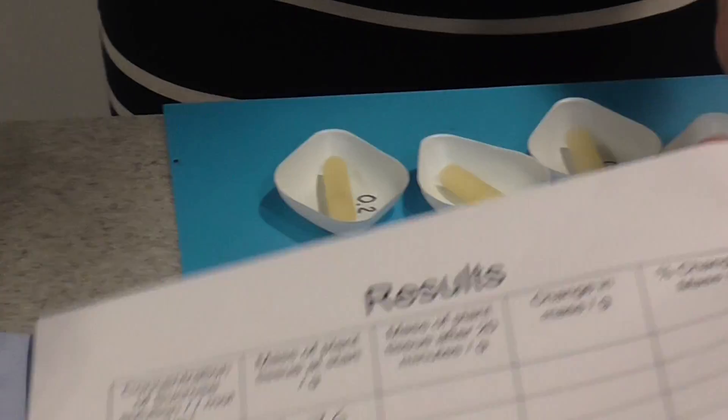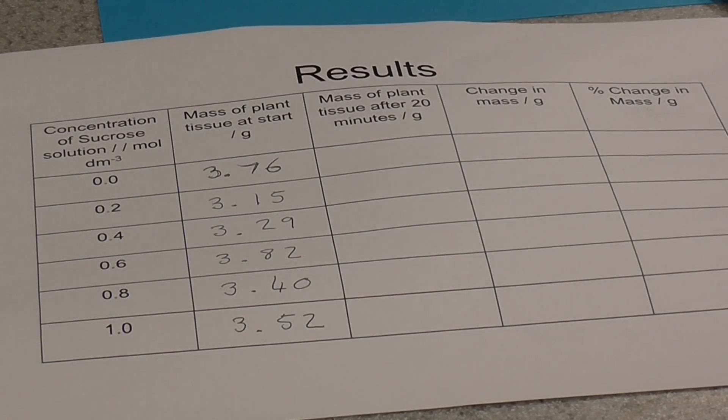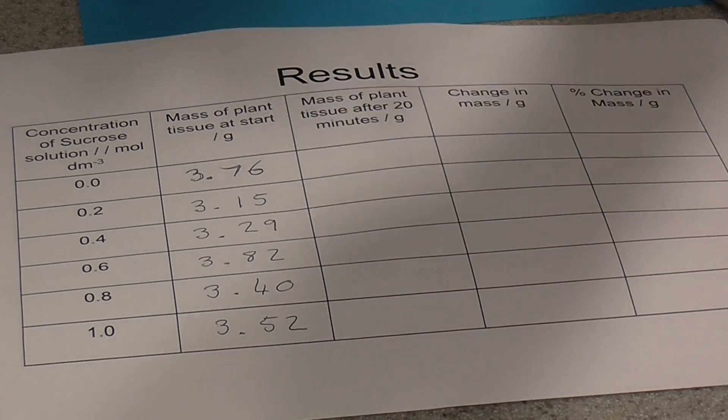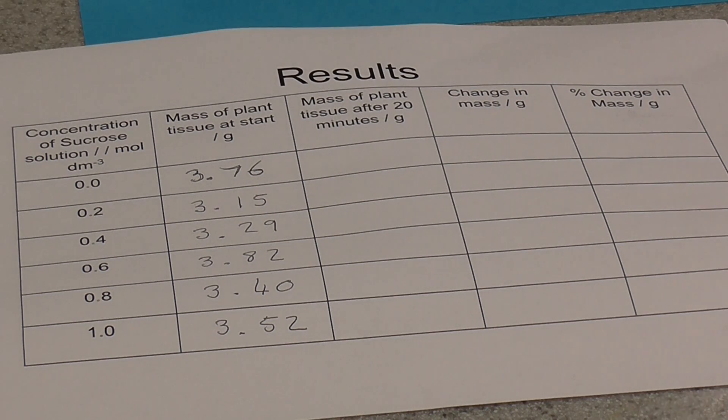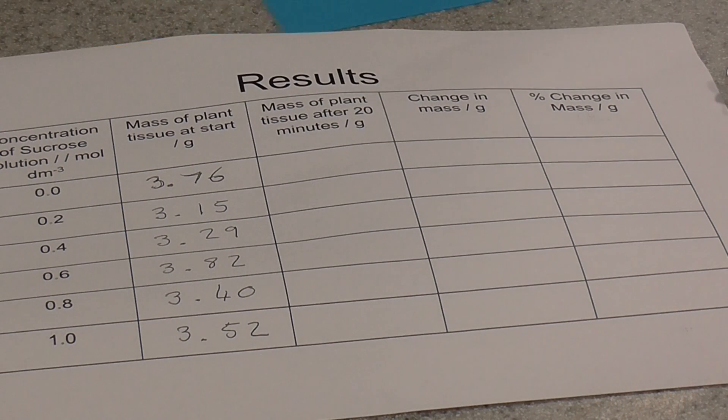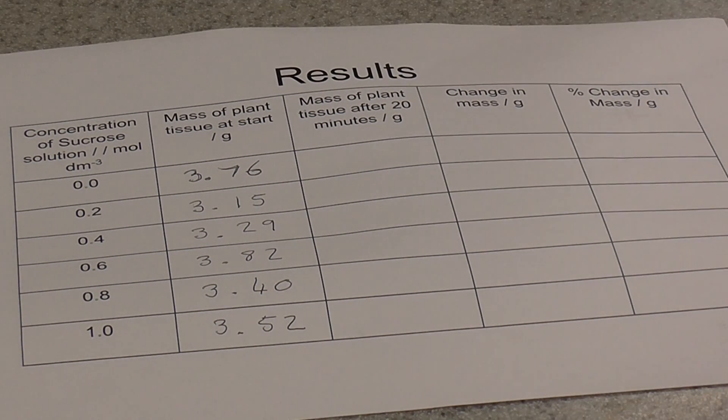This is the kind of results that you might get. Notice that all the chips have a different mass at the start of the experiment. As soon as you've weighed every single potato chip, you then need to go over to your water bath and place each chip in the correctly labeled solution. Then you need to leave them in the water bath, set your timer, and twenty minutes should be plenty of time for this experiment to work.